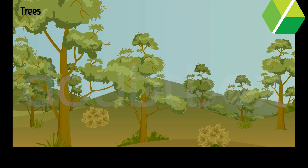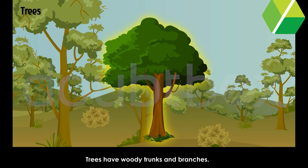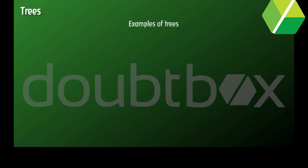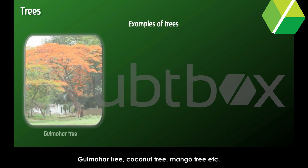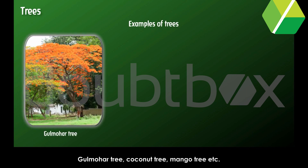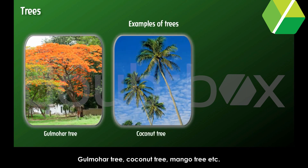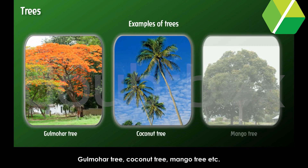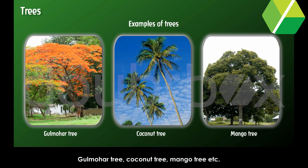Trees: Tall and large plants are called trees. Trees have woody trunks and branches. Examples of trees are the Gulmohar tree, coconut tree, mango tree, etc.